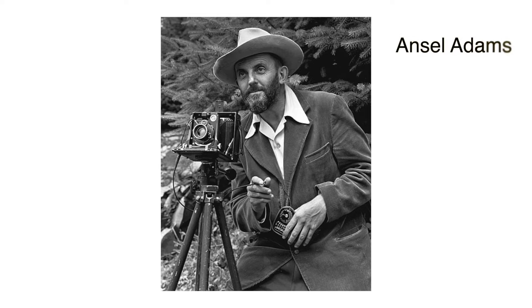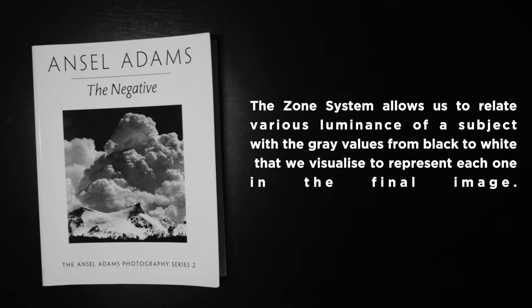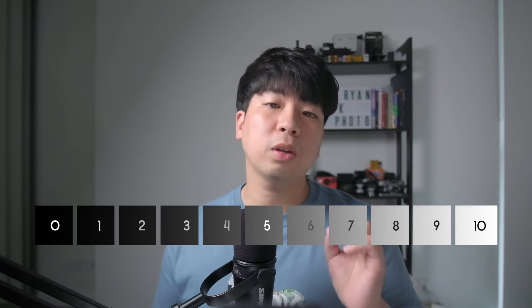There are lots of ways to measure exposure and there is no single answer, but when I measure exposure for my film work I use this Pentax light meter and also the zone system. The zone system was developed by one of my favorite photographers, the legendary Ansel Adams. Ansel Adams explains the zone system as allowing us to relate various luminances of a subject with gray values from black to white that we visualize to represent each zone in the final image. The zone system assigns numbers from zero through ten to different brightness values.